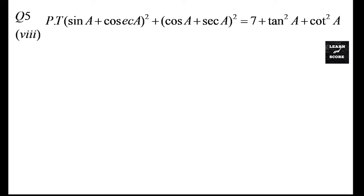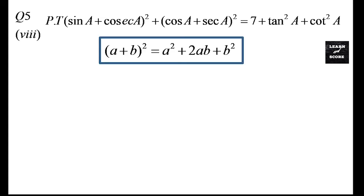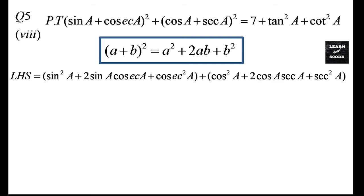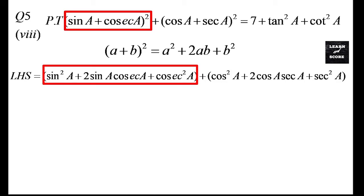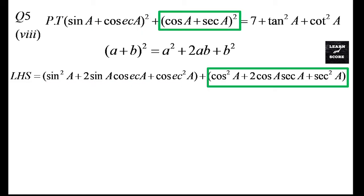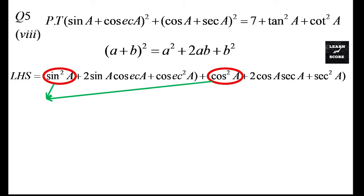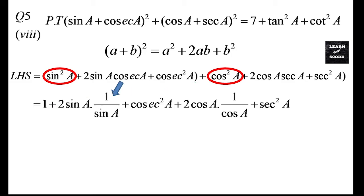Moving to question number 5, eighth part. Prove that (sinA + cosecA)² + (cosA + secA)² = 7 + tan²A + cot²A. There are two brackets on the left side that we have to simplify. Using the identity (A + B)² = A² + 2AB + B², the LHS expands to sin²A + 2sinA·cosecA + cosec²A + cos²A + 2cosA·secA + sec²A. The first bracket is marked in red and the second in green.